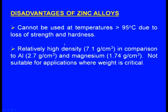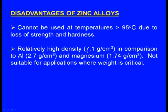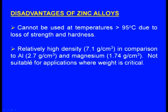Disadvantages of zinc alloys: cannot be used at temperatures greater than 95°C due to loss of strength and hardness; relatively high density at 7.1 grams per cubic centimeter — compared to aluminum at 2.7 g/cc and magnesium at 1.74 g/cc — making them not suitable for applications where weight is critical. With this we are completing the zinc alloys.